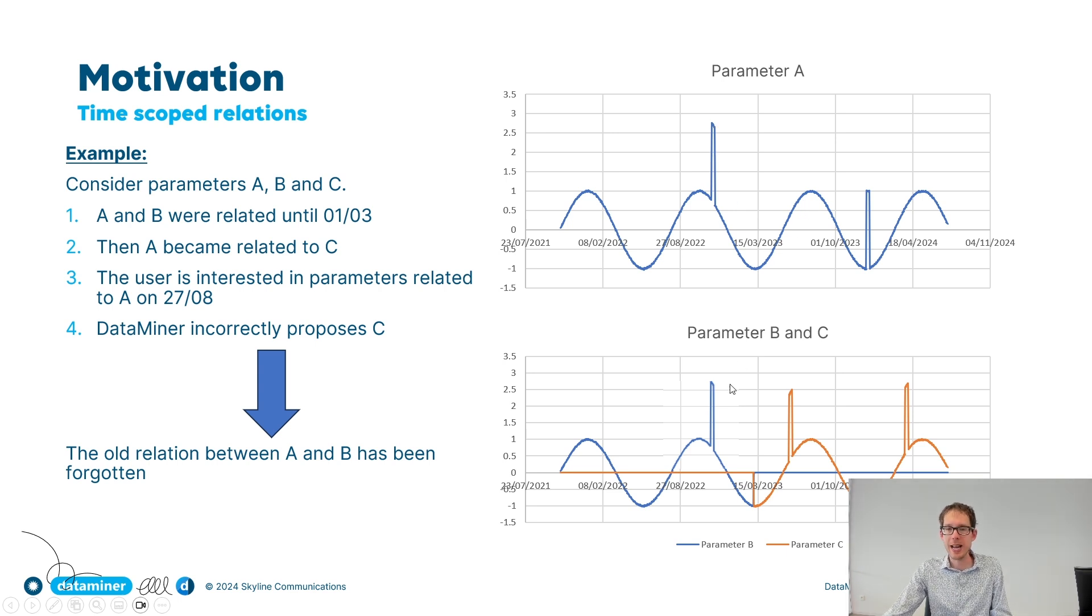So you want to investigate some issue that happened in the past. Now since the relation between parameter A and B has been broken since the 15th of March, our cloud-based relation learning algorithm has forgotten all about that relation. And instead, when you ask about parameters related to A, it's simply going to propose that you should check out parameter C. But of course you don't want that because you're interested in this problem, and at that point in time parameter A was not related to parameter C. It was related to parameter B. Again, time-scoped relation learning can help you out there.